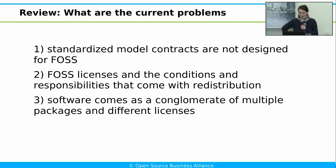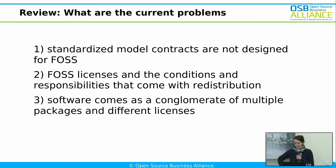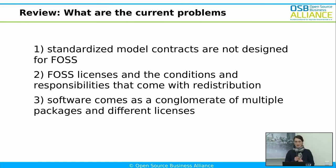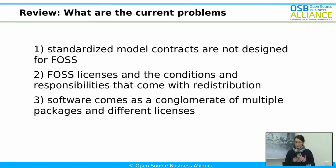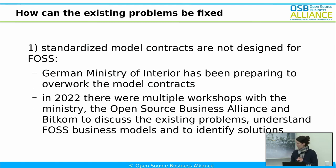Let's review. We have looked at three different problem areas that worry the German administration. First, the standardized model contracts are not designed for FOSS. Second, FOSS licenses come with certain conditions that you have to comply with whenever you want to redistribute the software. And thirdly, software is always a conglomerate of multiple packages and different licenses. Now we're going to look at some possibilities to fix these problems.